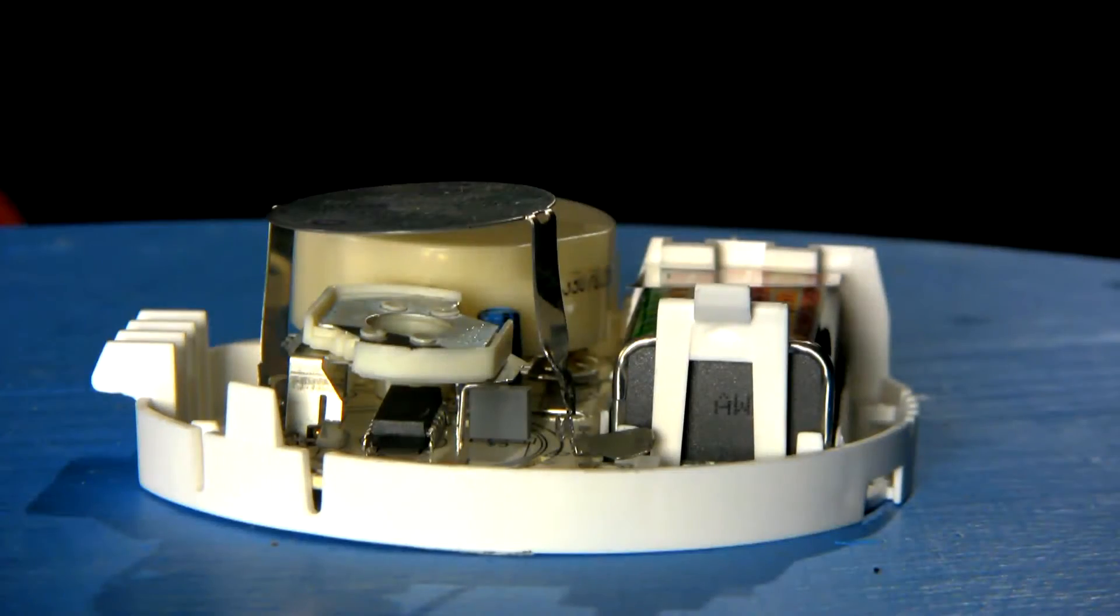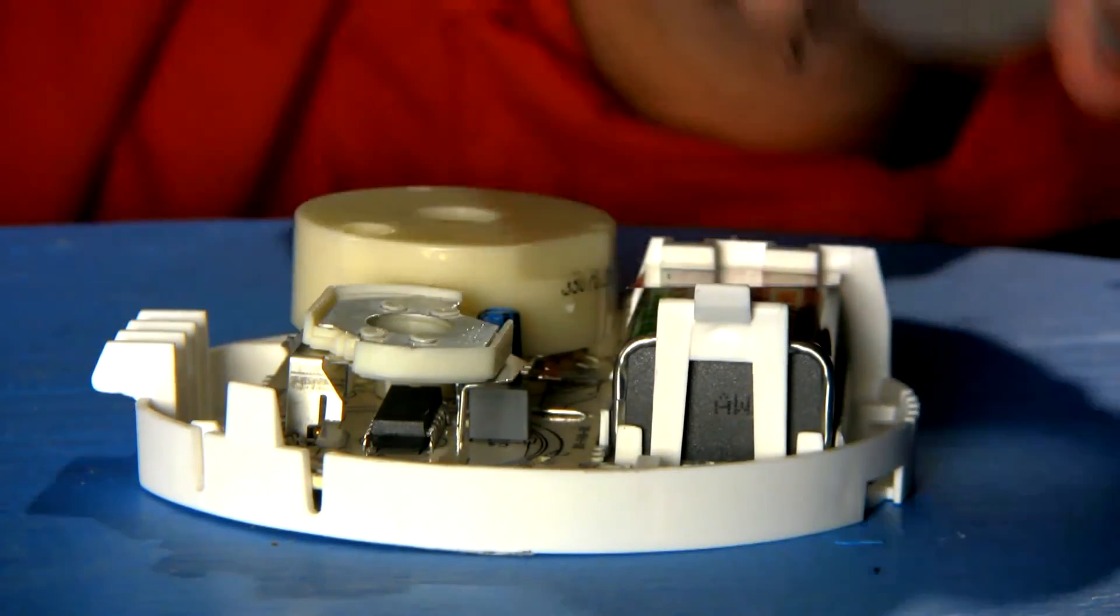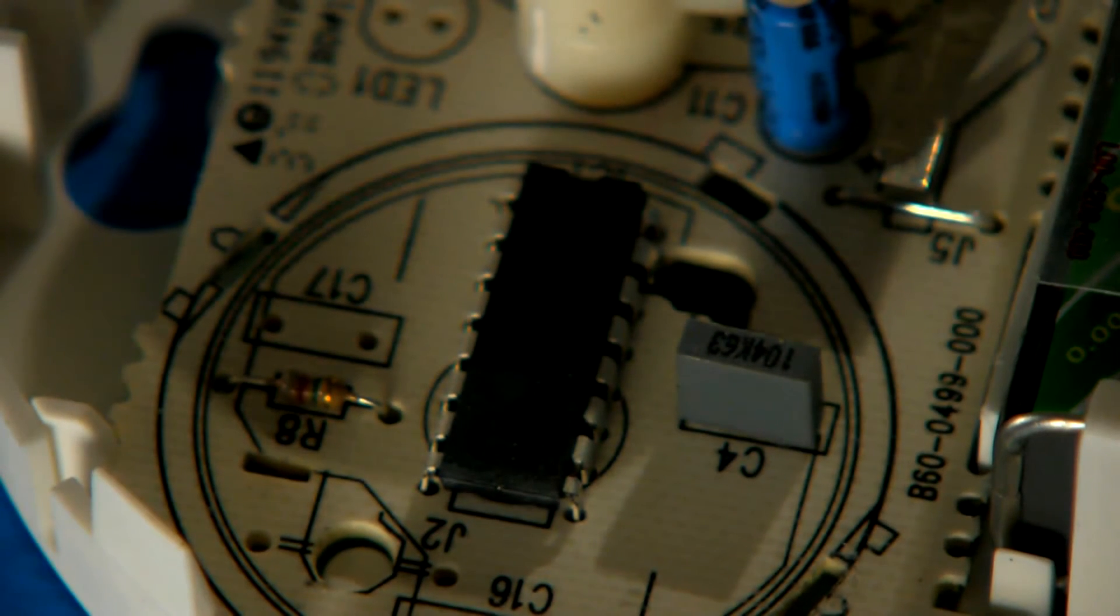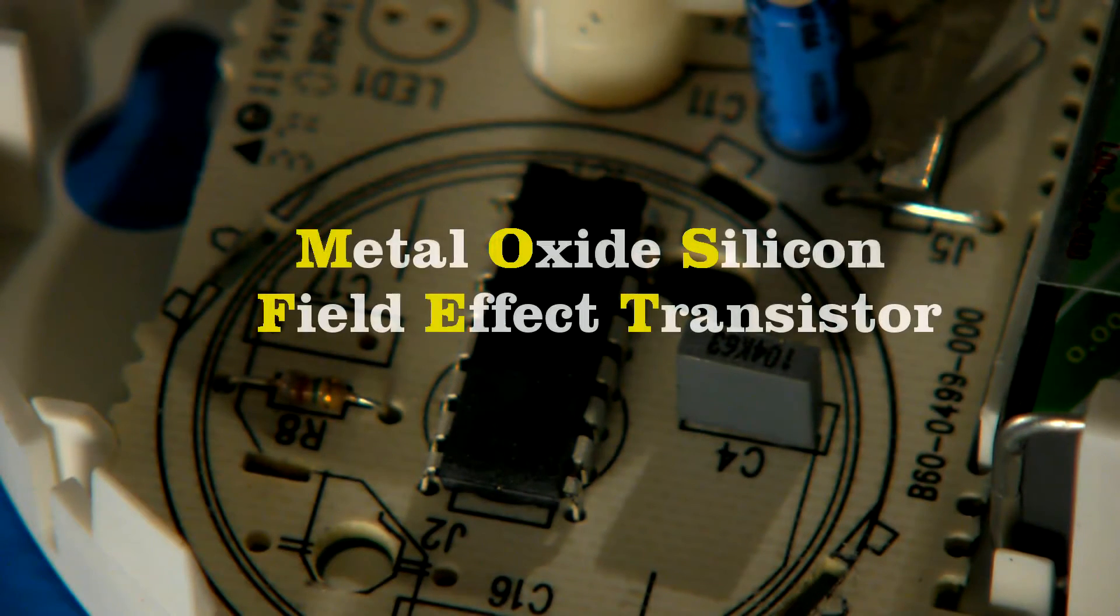Now to make such a compact thing work with only a 9-volt battery required the solid-state revolution of the 1960s. Let me show you. If I remove the two electrodes, you can see a small integrated circuit. It incorporates a marvelous device called a MOSFET, which can detect those very small changes in current.